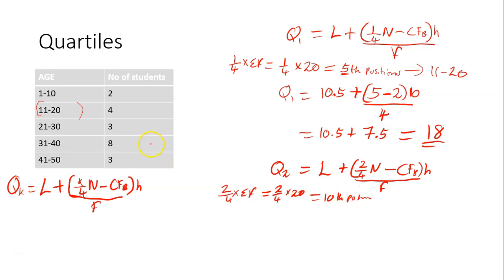So how do we locate the 10th position? We find 2 — not up to 10th. Add 4 to get 6, not up to 10. Add 3 to get 9, not up to 10 yet. Then when you add the next frequency, which is 8, at this point you've gotten to the 10th position. So this class is the 10th position class; the 10th position falls within this class.